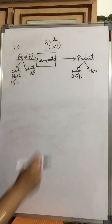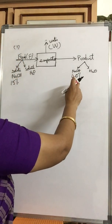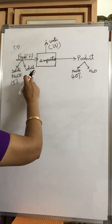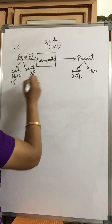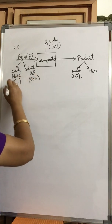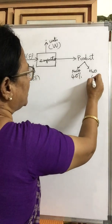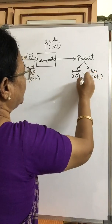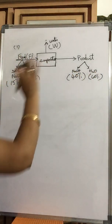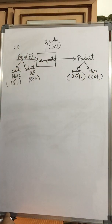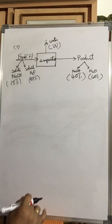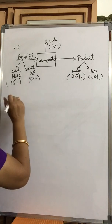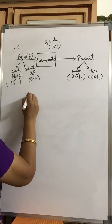Initially the feed is 15% caustic soda, so that means 85% water. It is concentrated to 40% NaOH, meaning 60% water in the product. This is the information given. Also, the single effect evaporator is fed with 10,000 kg per hour of weak liquor.